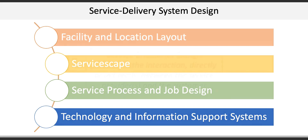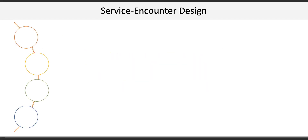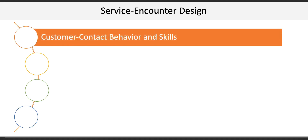The next key concept is service encounter design, which focuses on the interaction — either directly or indirectly — between the service provider and the customer. There are four principal elements in service encounter design. The first design element is customer contact behavior and skills, which refers to the physical or virtual presence of customers in the service delivery system during a service experience. Such systems can be either high contact or low contact systems.